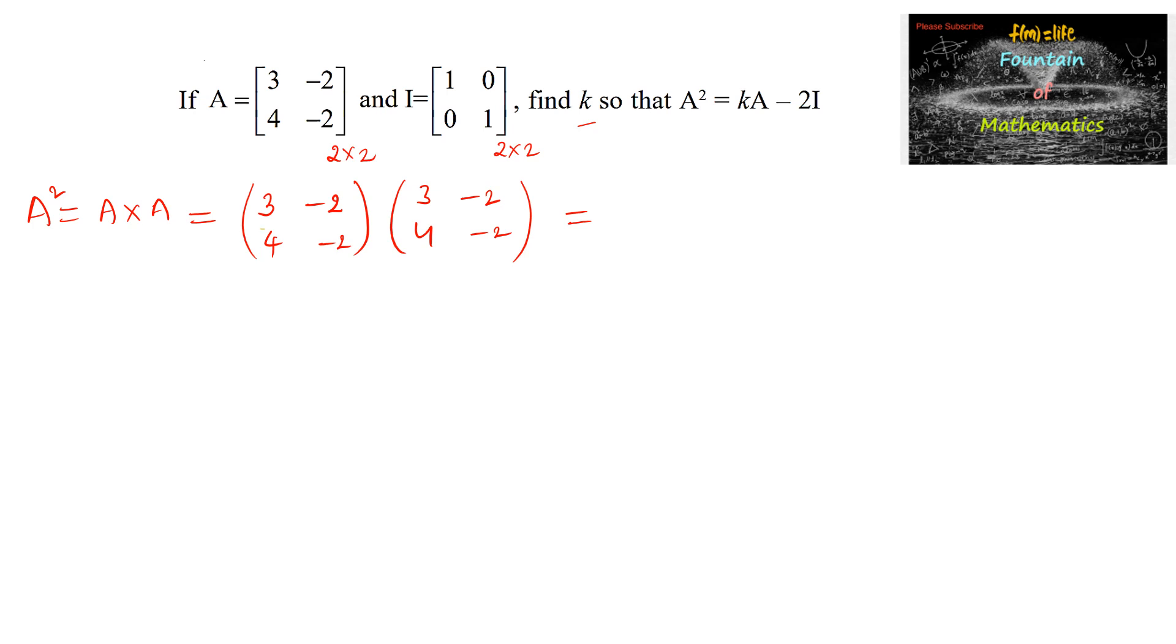So multiplication row with column. 3 into 3 is 9, and negative 2 into 4 is negative 8. Next, 3 into minus 2 is minus 6, and minus 2 into minus 2 is plus 4.